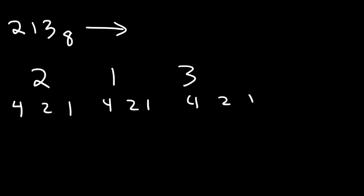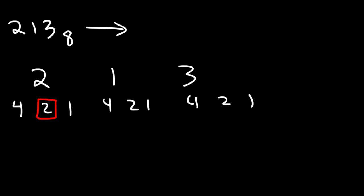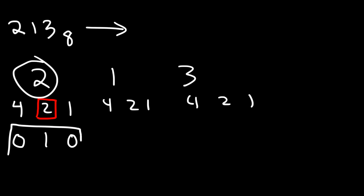So we're going to convert each digit into a binary number. To get 2, all I need to do is use a 2. So I'm going to replace the 2 with a 1, and the numbers I didn't use — 4 and 1 — I'm going to replace with a 0. So 2 in the binary system corresponds to 0, 1, 0.